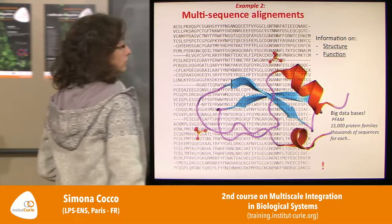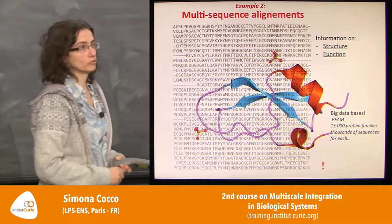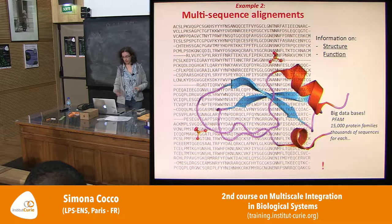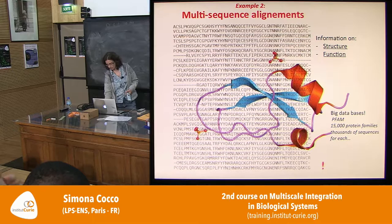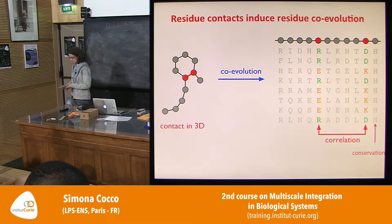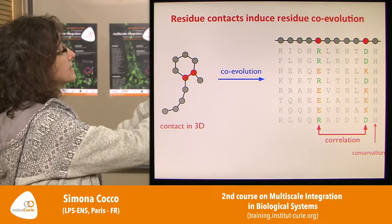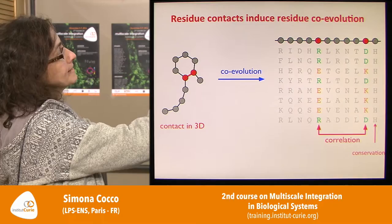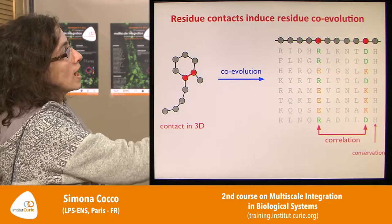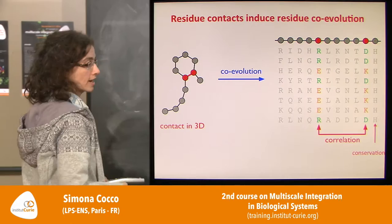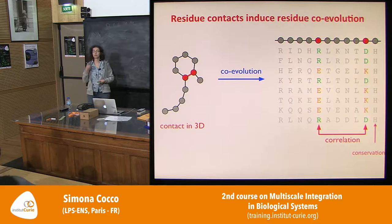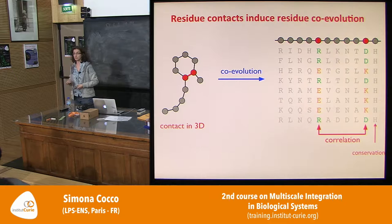What we would like to do is use statistical mechanics to find something about the structure and function of sequences from data. There are two important statistical properties of this alignment. First, on each site, amino acids have different frequencies — some sites are highly conserved, important for catalytic function, while others show much more variability.